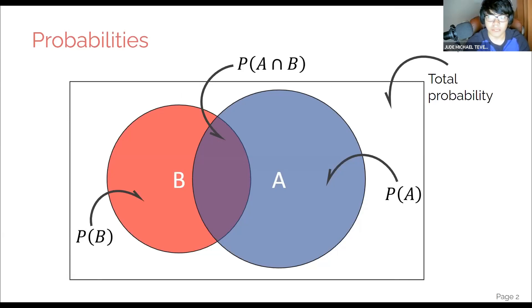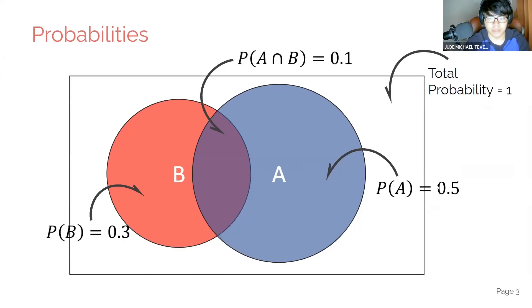We just assign values, of course. For example, you have a 0.5 probability for set A and 0.3 for set B. Of course, it's going to be one for the whole space. Then the intersection will be smaller than the probability of set B and set A.